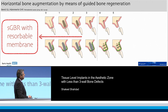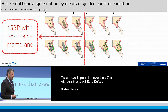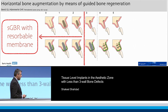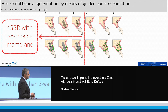Previously, a surgical protocol has been recommended for cases where we have minor dehiscence-type defects — minor three-wall peri-implant defects — which can be pretty effectively restored with simultaneous augmentation using resorbable membranes.